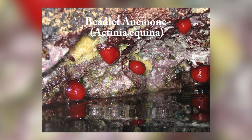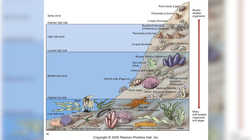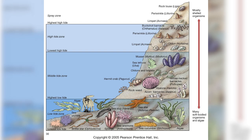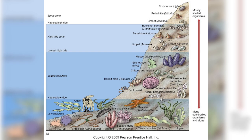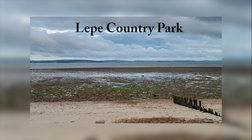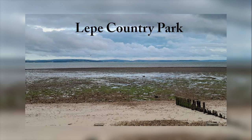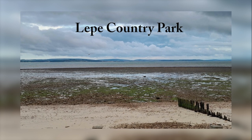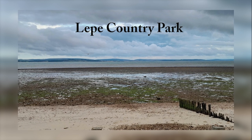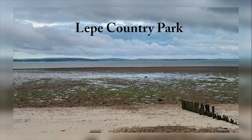The sea life inhabiting the intertidal zone arranges itself up the shore, depending on their ability to survive changes in moisture, temperature and salinity, and their ability to withstand strong waves. A typical rocky shore can be divided into different zones based on the amount of exposure to seawater and air.